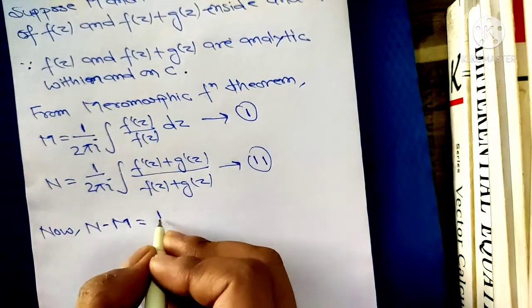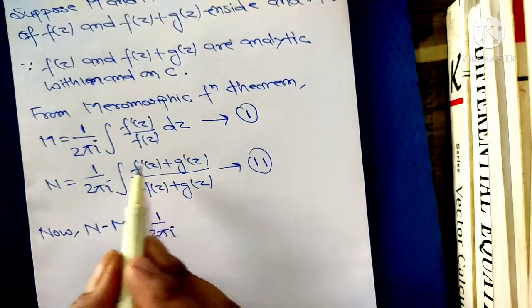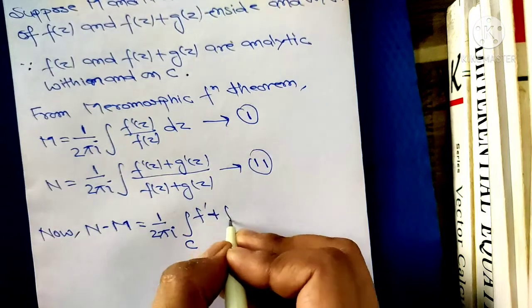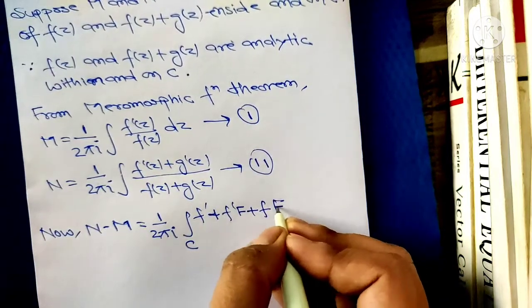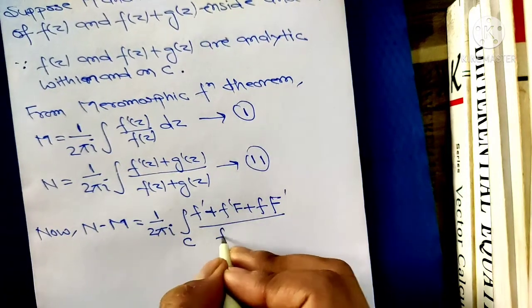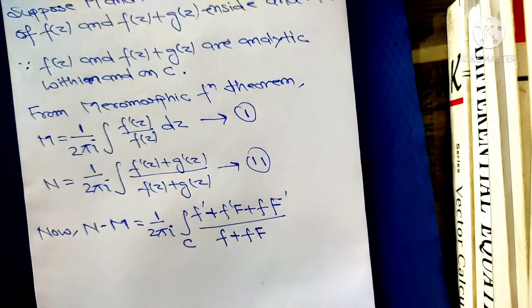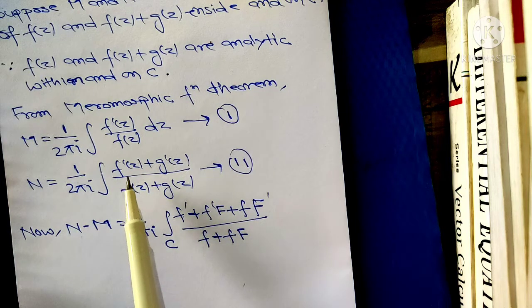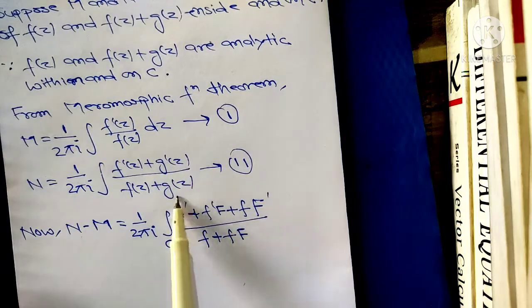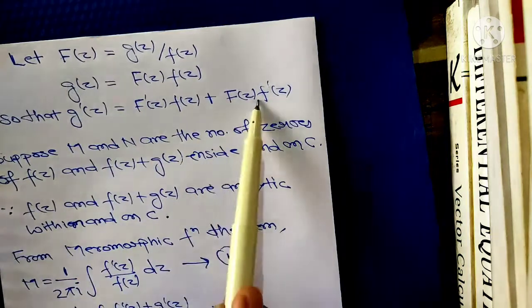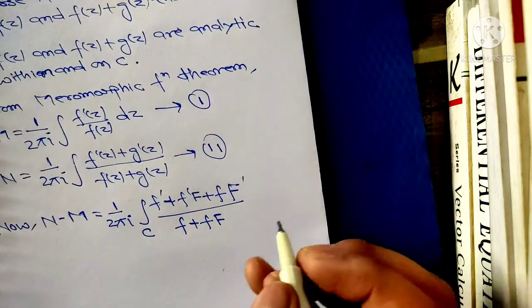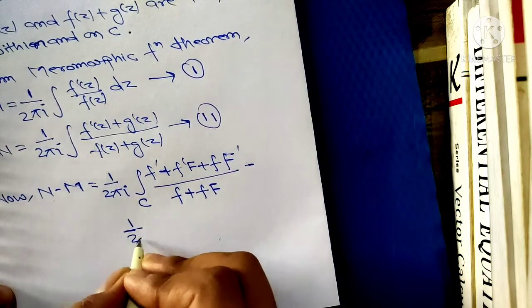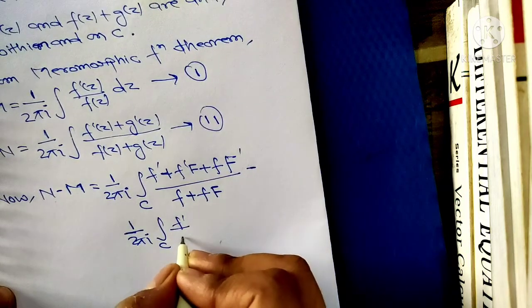Now, N minus M equals 1 over 2πi times the integral over C. We substitute the value of N using the expressions for g(z) and g′(z), since g(z) equals F(z)·f(z). The numerator becomes f′(z) plus F′(z)·f(z) plus F(z)·f′(z), and the denominator becomes f(z) plus F(z)·f(z), which is f(z)(1 plus F(z)). Then we subtract the value of M, which is the integral over C of f′(z) over f(z) dz.